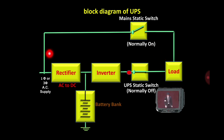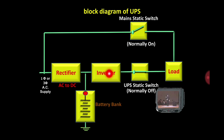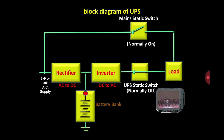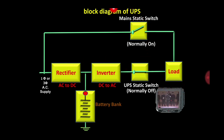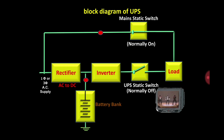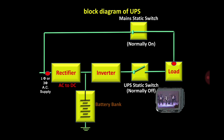When the main supply is not available, the load receives supply from the battery, and since the battery is DC, the inverter converts the DC into AC. So in both conditions — whether the main supply is available or not — the load continuously receives power and stays on. This entire arrangement is called UPS, i.e., Uninterrupted Power Supply.